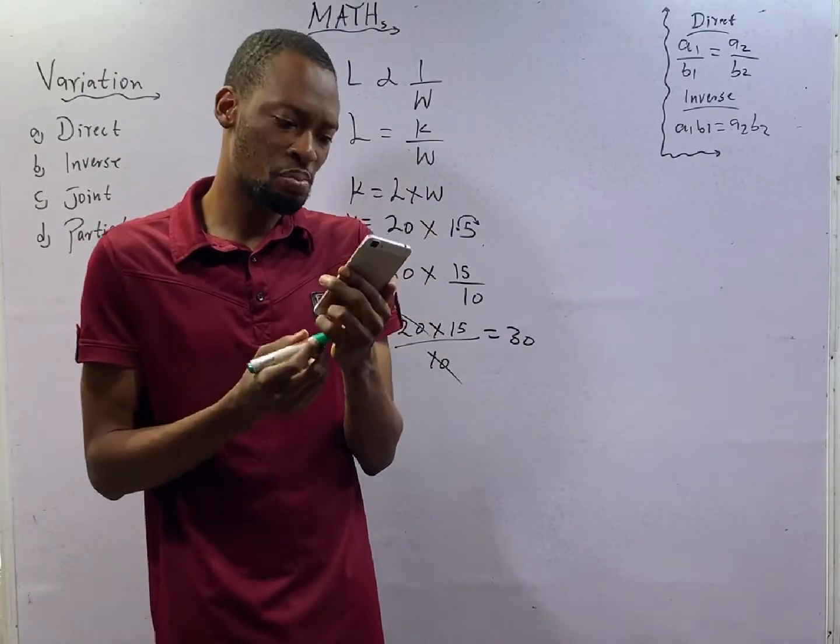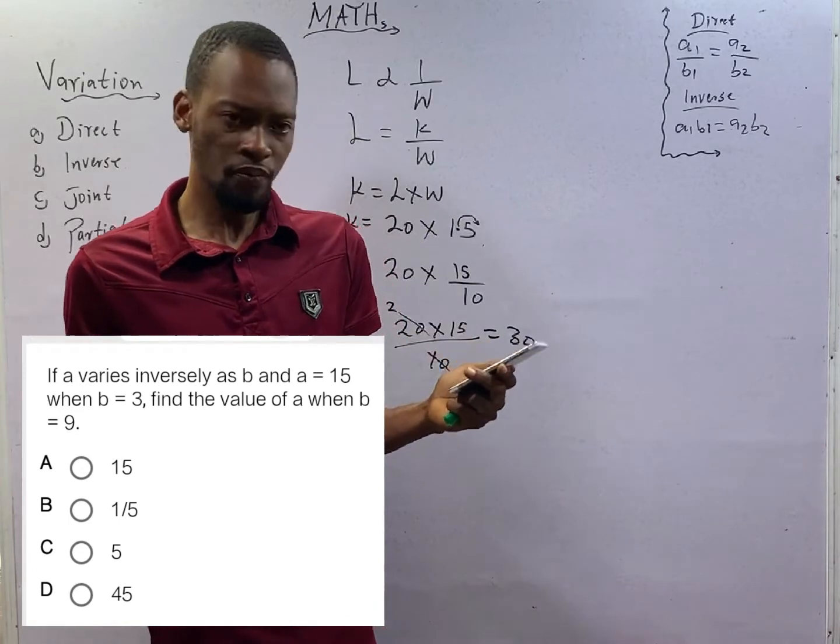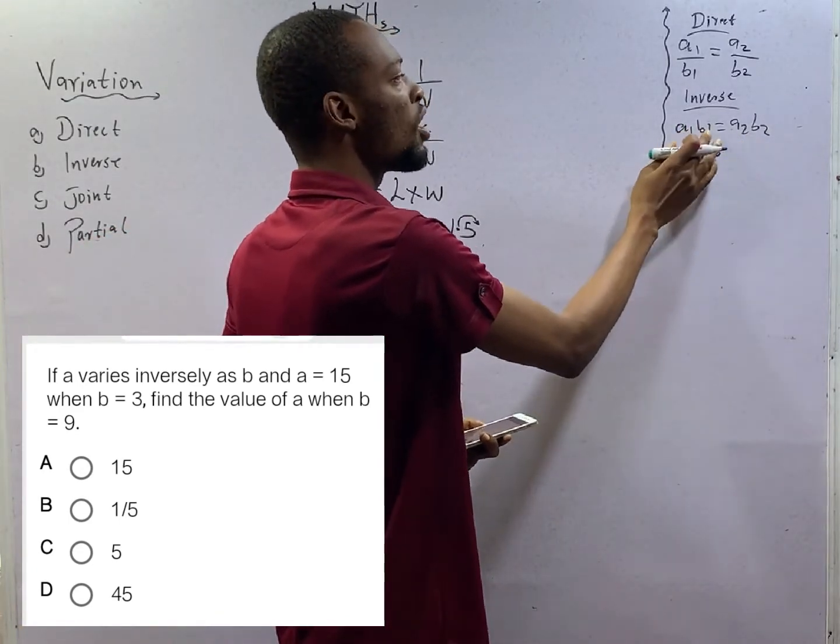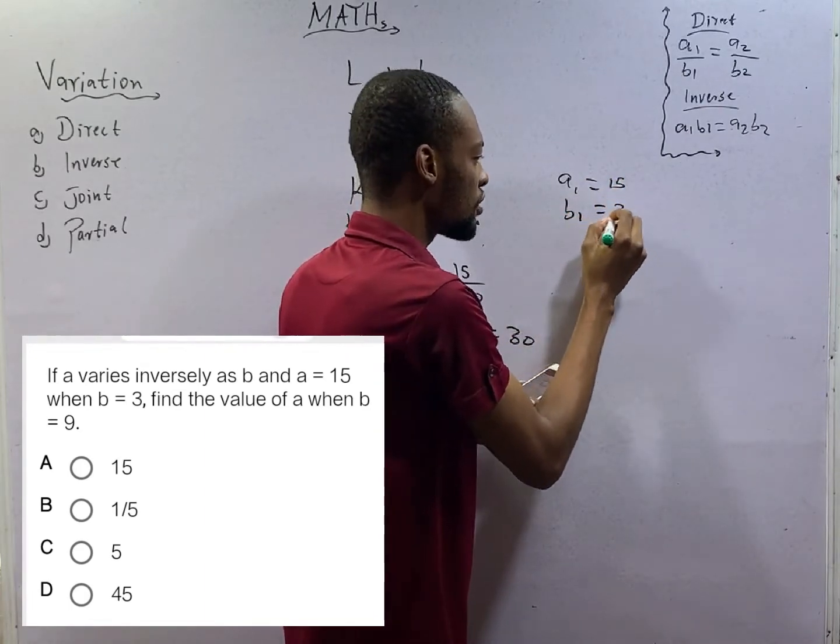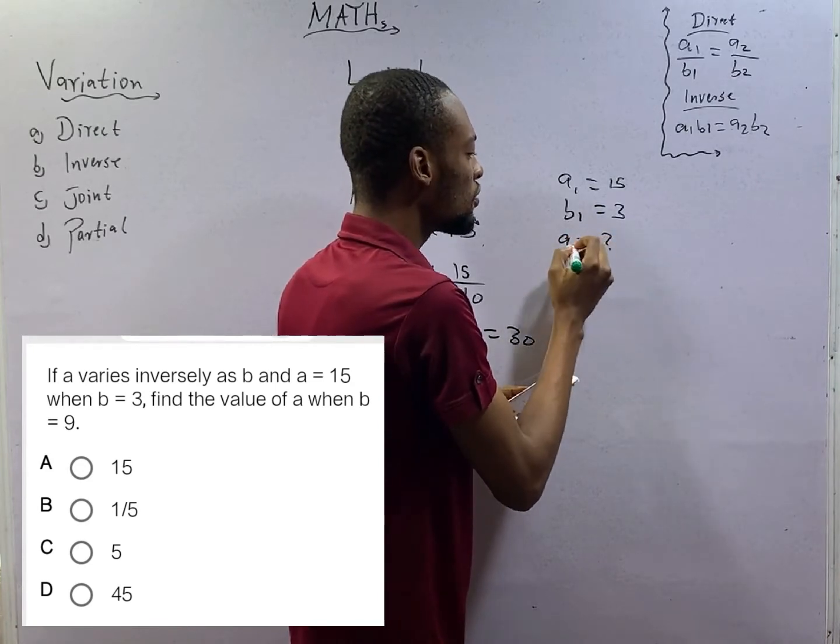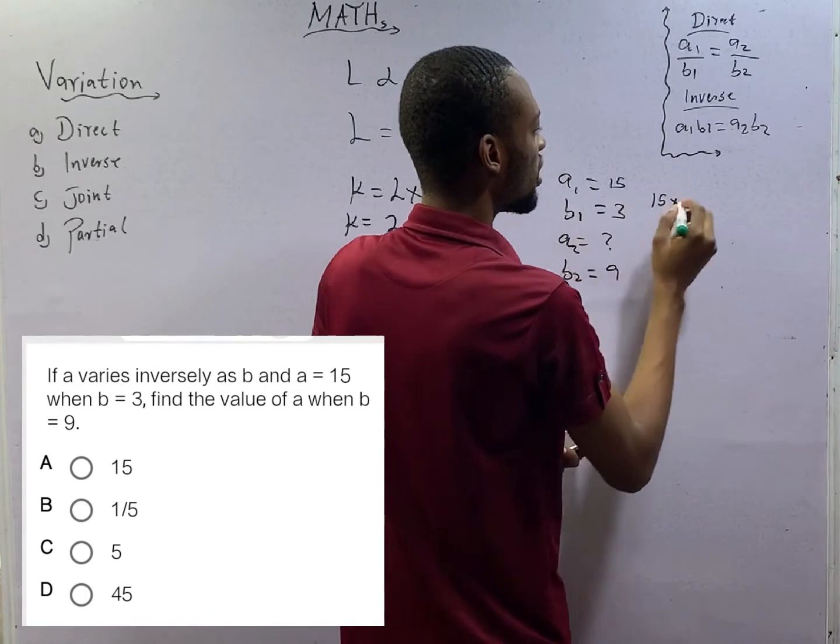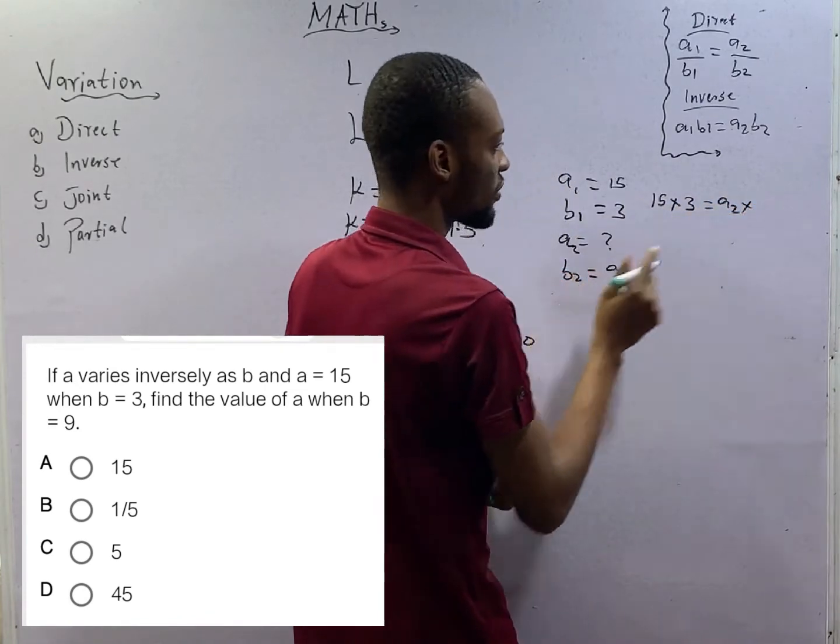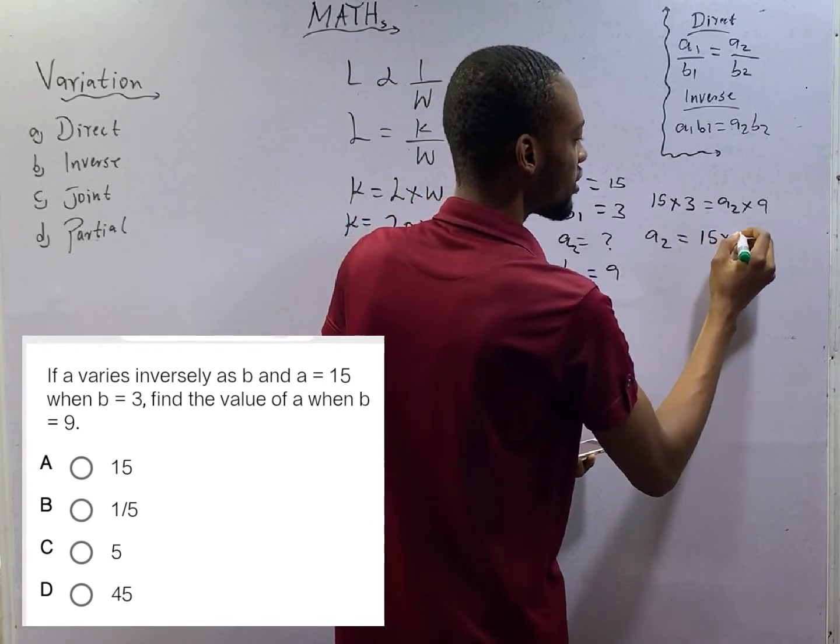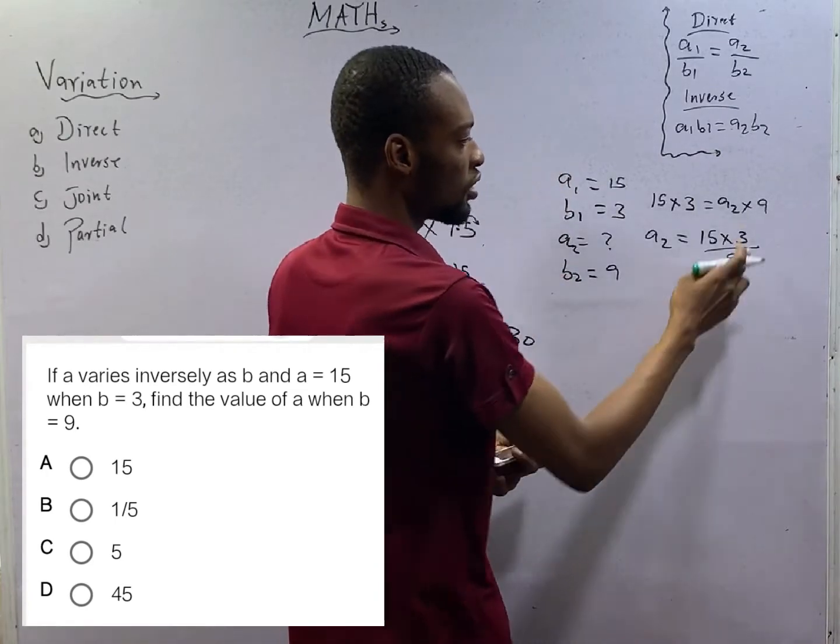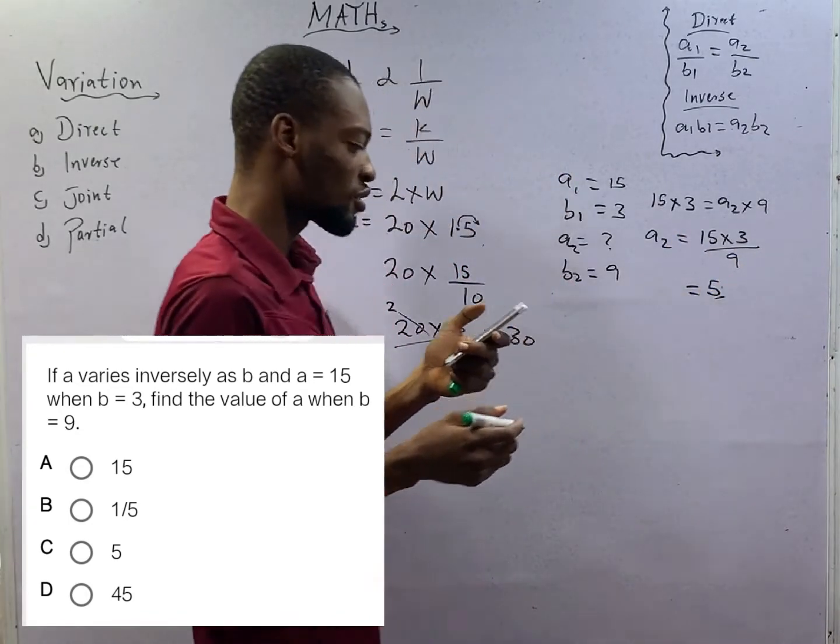If A varies inversely as B, and A equals 15 when B equals 3, find the value of A when B equals 9. Using our shortcut for inverse variation, A1 B1 equals A2 B2. A1 is 15, B1 is 3, A2 is unknown, and B2 is 9. So 15 times 3 equals A2 times 9. Dividing both sides by 9, A2 equals 15 times 3 over 9, which gives you 5. So 5 is the answer.